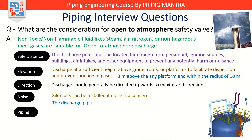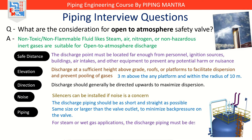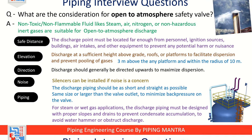The discharge piping should be as short and straight as possible — typically the same size or larger than the valve outlet to minimize back pressure on the valve, which can affect its opening characteristics and capacity. For steam or wet gas applications, the discharge piping must be designed with proper slopes and drains to prevent condensate accumulation, which could lead to water hammer or obstruct discharge.